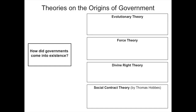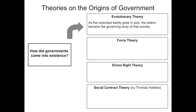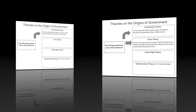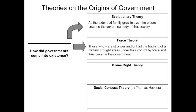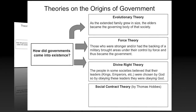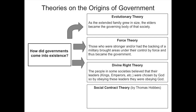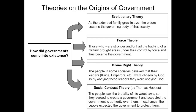The evolutionary theory holds that as the family extends or grows, the elders become the governing body. Force theory is the idea that those who are stronger or have the backing of military can bring areas under their control by force, thus becoming the government. Divine right theory is the idea that people in some societies think their leaders are chosen by God, so obeying their leaders means obeying God. The social contract theory says the brutality of life without laws is so bad that people are willing to let someone control them to avoid the chaos of having no governance at all.